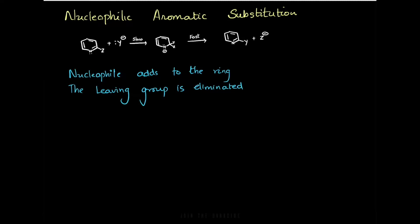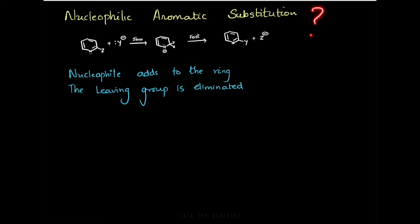What other reactions can pyridine undergo? Pyridine can also undergo nucleophilic aromatic substitution reaction. Pyridine has a nitrogen in its ring structure, which withdraws electrons. This electron withdrawal creates a partial positive charge at the two and four positions of pyridine, and therefore it can be easily attacked by a nucleophile.